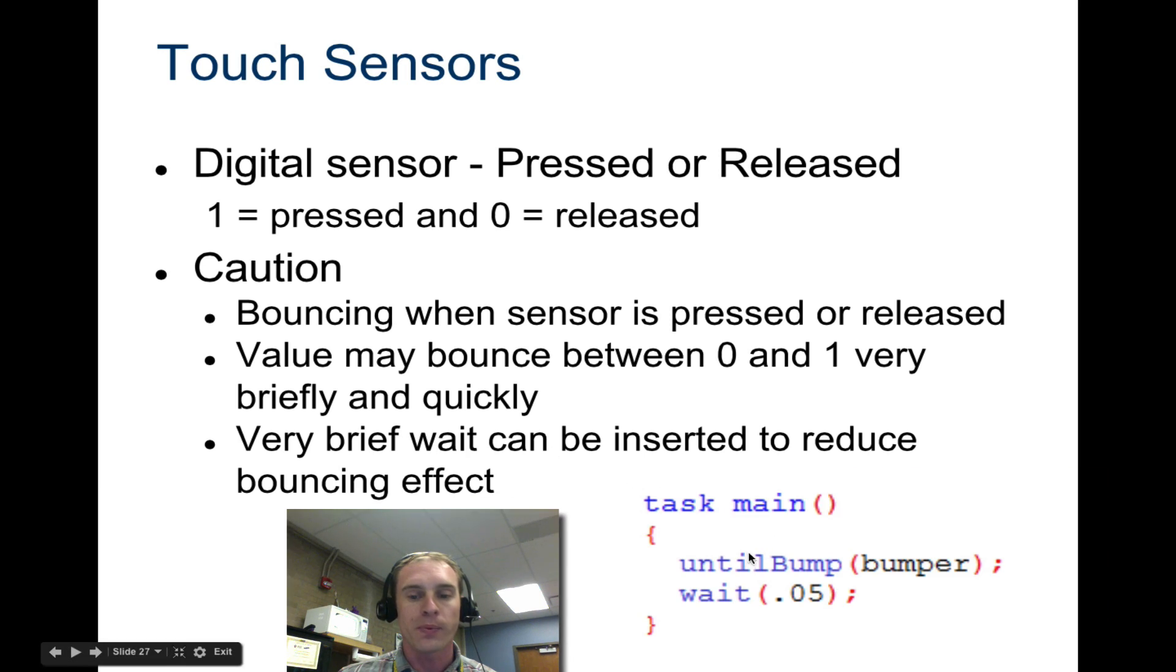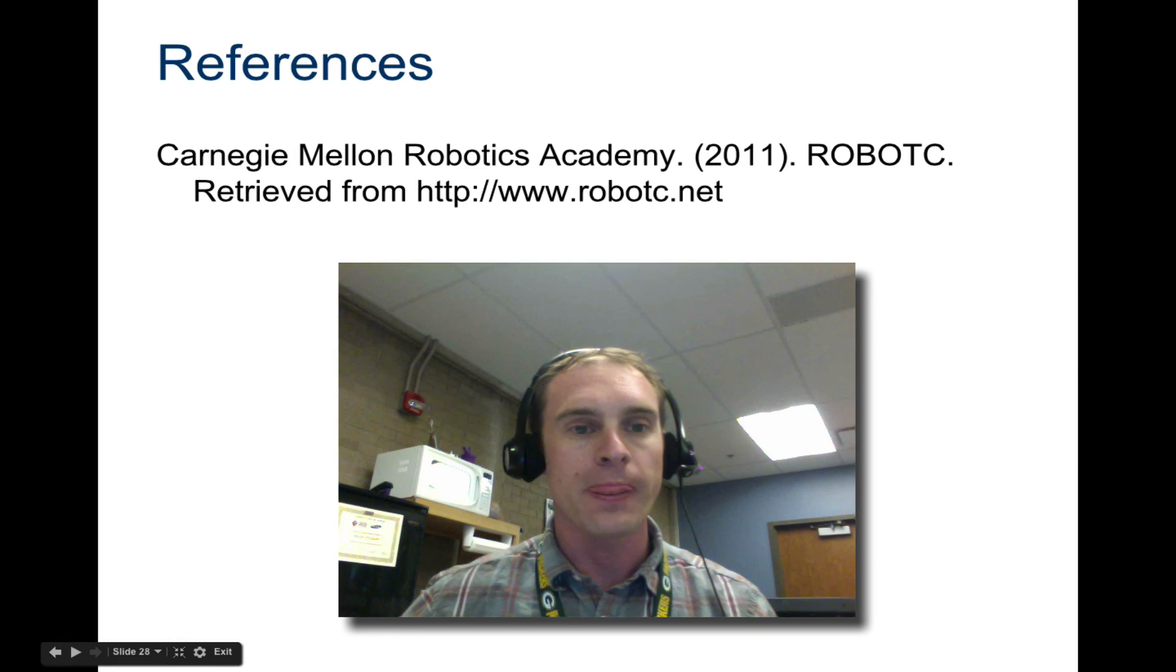Here would be the example. Until bump, wait .05, five hundredths of a second, that's plenty. Because you push that button quick. And then it's waiting five hundredths of a second before it reads that next line, you won't have bouncing. That's it.